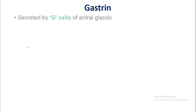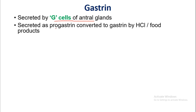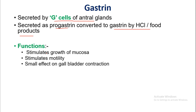Gastrin is secreted by the G cells of enteral glands. It is secreted as progastrin, which is converted to gastrin by HCl and food products. Functions of gastrin include: it stimulates growth of the mucosa and stimulates motility of the stomach, with a small effect on gallbladder contraction.